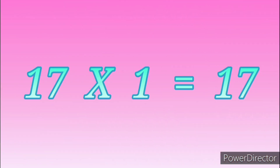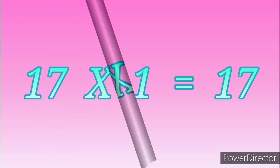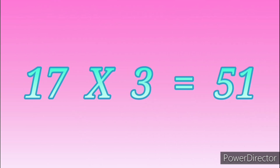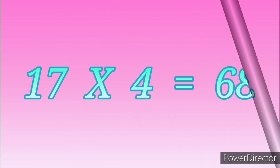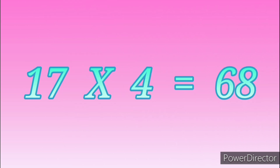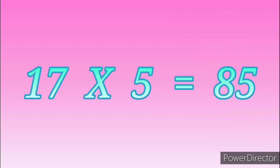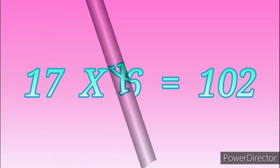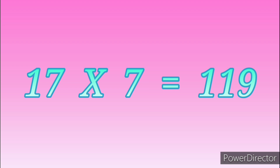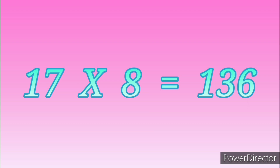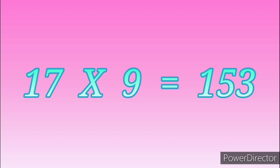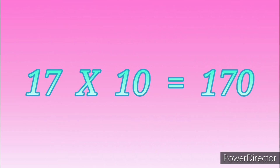Table of Seventeen: 17 sixes are 102, 17 sevens are 119, 17 eights are 136, 17 nines are 153, 17 tens are 170.